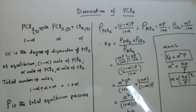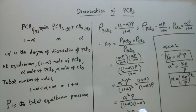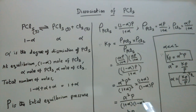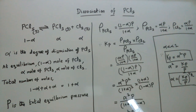After simplification we get Kp equals alpha squared times P divided by (1+alpha)(1-alpha). Using the identity (a+b)(a-b) = a² - b², we get (1+alpha)(1-alpha) = 1 minus alpha squared. Therefore, the equilibrium constant is Kp = alpha²·P / (1 - alpha²).